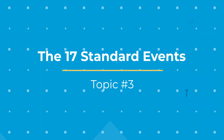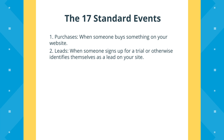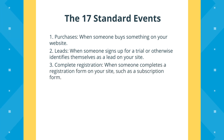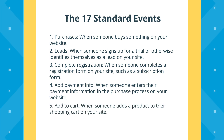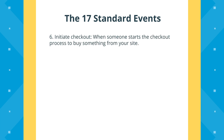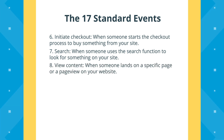The 17 standard events include: purchases — when someone buys something on your website; leads — when someone signs up or inquires; complete registration — when someone fills out a subscription form; add payment info — when someone enters their credit card during checkout; add to cart — when someone adds a product while shopping; initiate checkout — when someone lands on the checkout page; search — when someone uses the search function; and page view — when someone lands on a specific page.